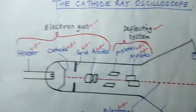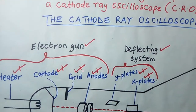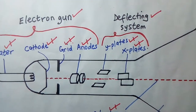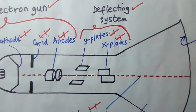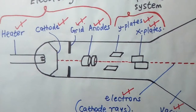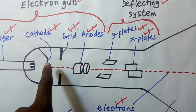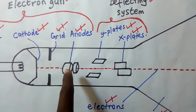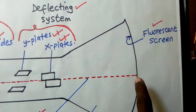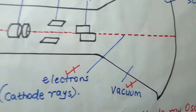The parts are: the heater, the cathode, the grid, the anodes, the Y plates, the X plates, and the fluorescent screen. The electrons start from the cathode — electrons are produced from the cathode. They pass through the grid, go to the anodes, go to the Y plates, go to the X plates, and finally find themselves on the fluorescent screen. Inside the tube there should be no air, so it is a vacuum.